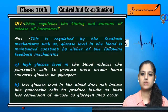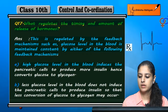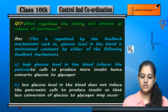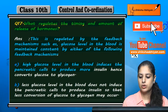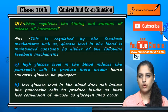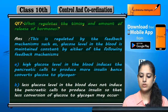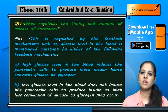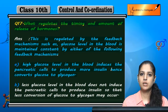A high glucose level in the blood induces the pancreatic cells to produce more insulin, which then converts glucose to glycogen. If glucose is high in the body, it induces the pancreatic cells to produce insulin.